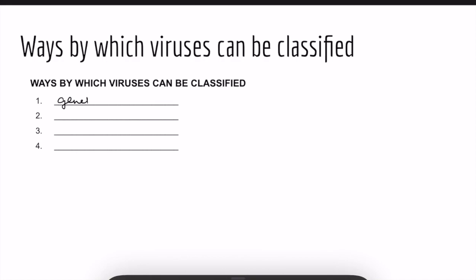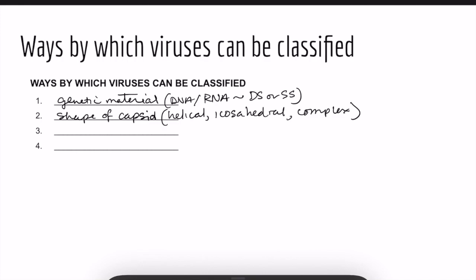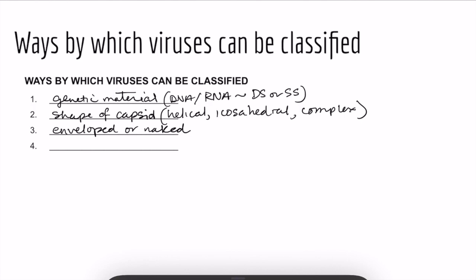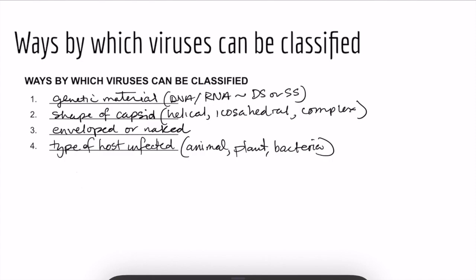Viruses can be classified in a variety of ways — we've found four ways so far in lecture. We can classify them by the type of genetic material: DNA or RNA, double-stranded or single-stranded. We can classify by the shape of their capsid: helical, icosahedral, or complex. We can classify by the presence or absence of an envelope. And finally, we can classify by the type of host they infect: animals, plants, or bacteria. These four you should know.